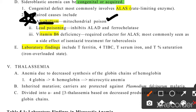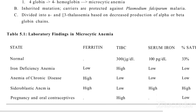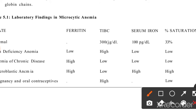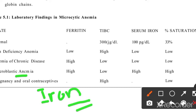We will discuss the lab findings in a table format to compare iron deficiency anemia with sideroblastic anemia. In sideroblastic anemia, serum iron will be high. Why? Because protoporphyrin is not available to use the iron, so iron accumulates and cannot be utilized.